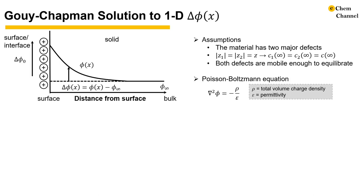It will also be a high temperature condition as both defects need to be mobile enough to equilibrate. To begin, we have the Poisson-Boltzmann equation, which describes the distribution of the electrical potential in solution in the direction normal to a charged surface.